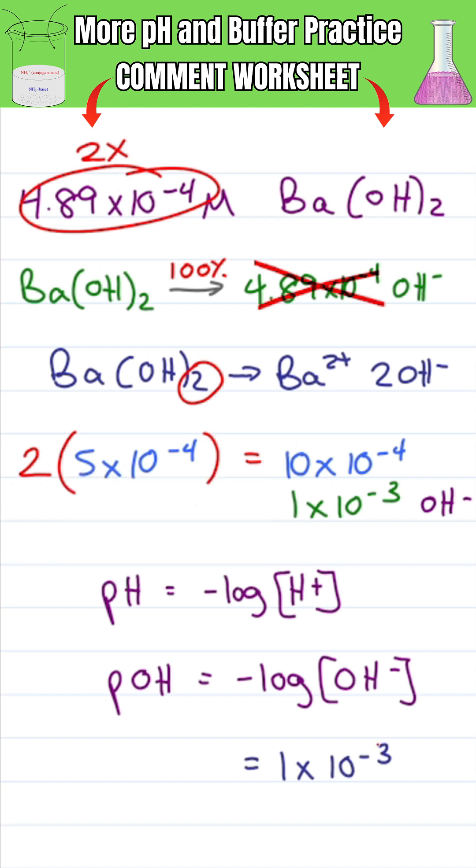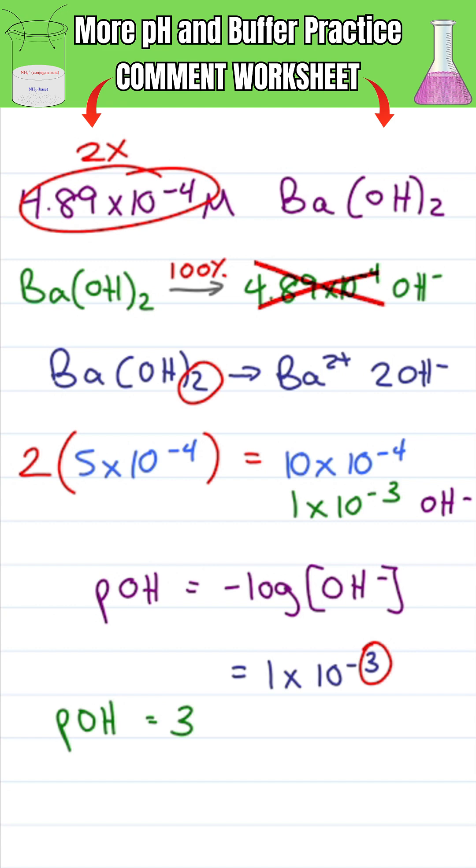All you do is grab that negative exponent and that is your value. pOH is equal to 3.